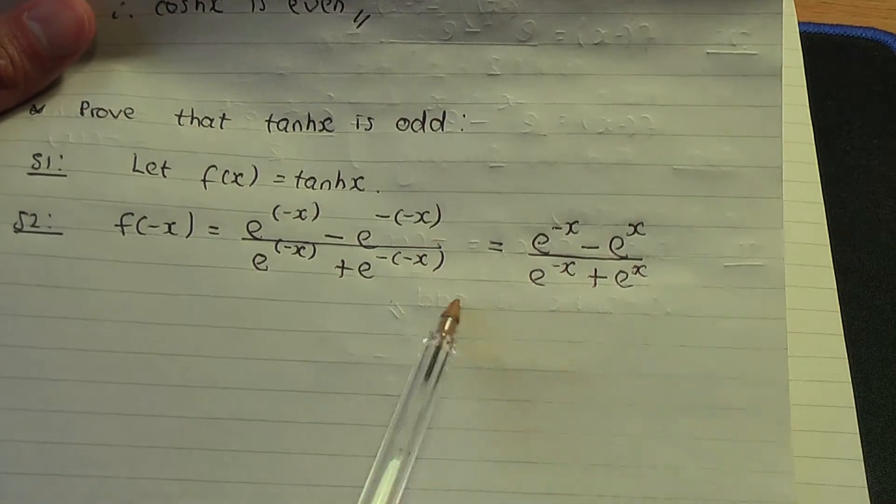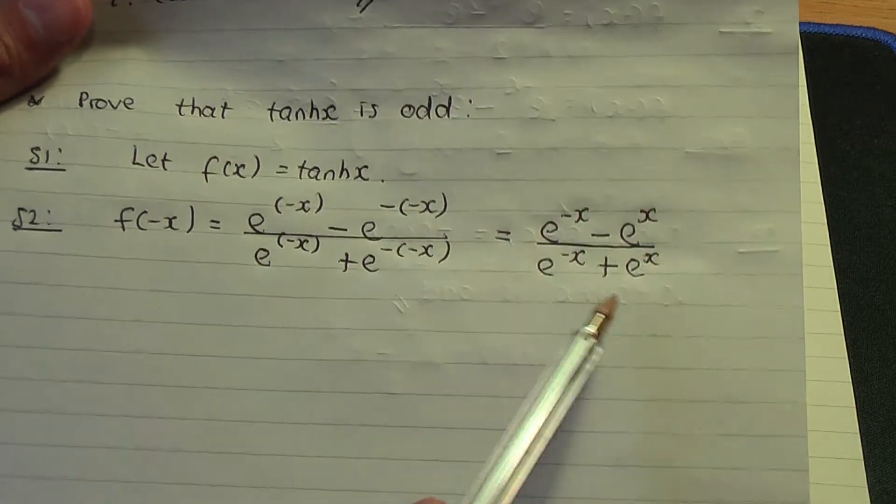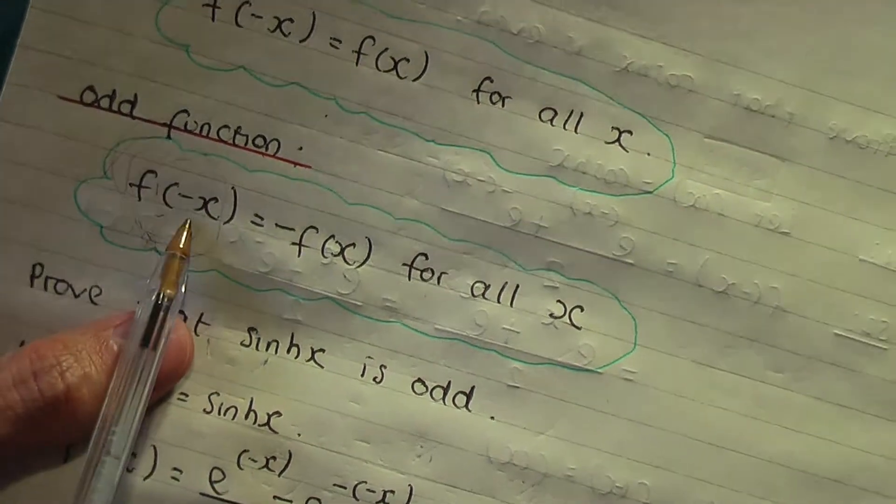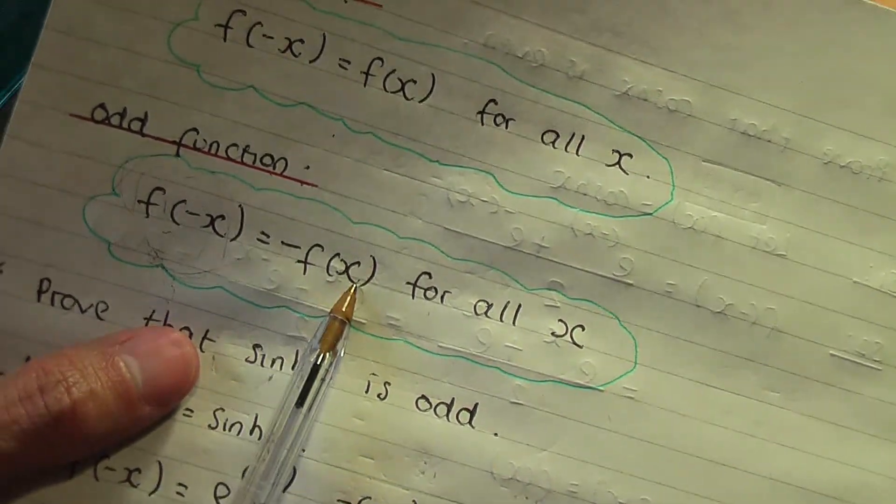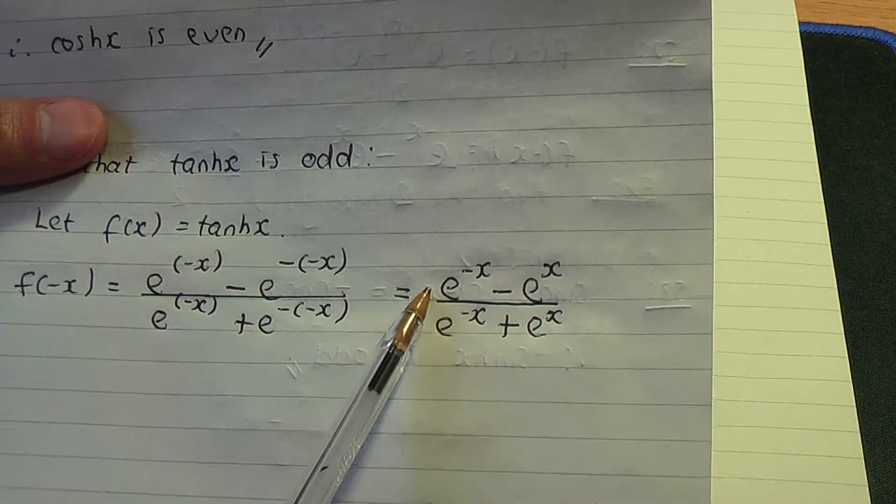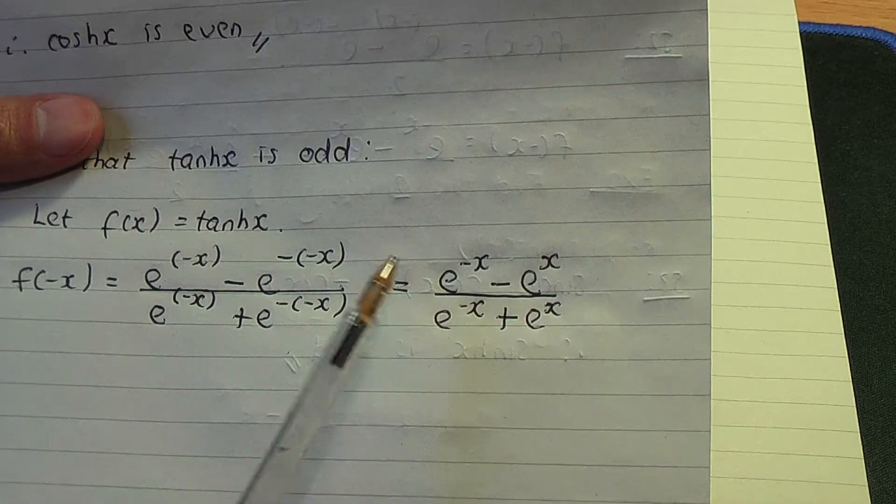Now we're nearly there. Remember, for odd functions we need to end up with f(-x) being -f(x), so we need to get that minus. What we're going to do is take out a common factor of -1 from the numerator.